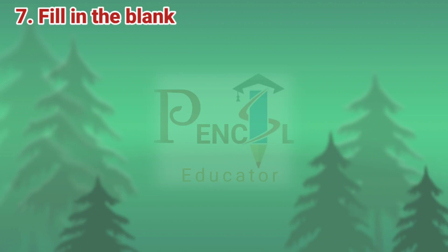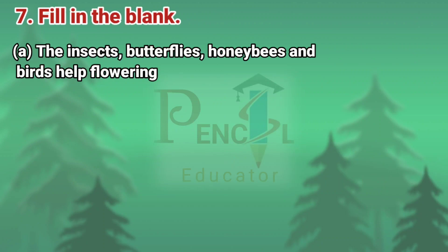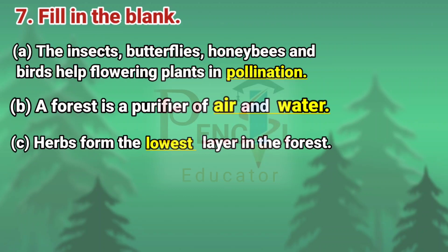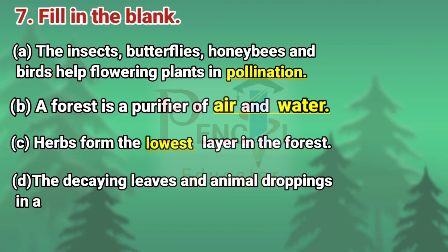Seventh question: Fill in the blank. A. The insects, butterflies, honeybees, and birds help flowering plants in pollination. B. A forest is a purifier of air and water. C. Herbs form the lowest layer in the forest. D. The decaying leaves and animal droppings in a forest enrich the soil.